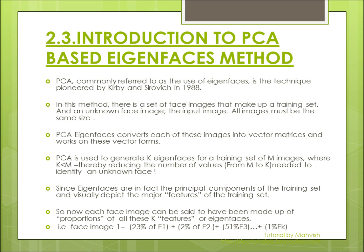We can say that each face image in a training set, or the input image, can be said to have been made up of proportions of all these K features or Eigenfaces. That means that, for example, face image 1 is made up of 23% of Eigenface 1, 2% of Eigenface 2, 51% of Eigenface 3, and so on till the Kth Eigenface. If we add all of these proportions of Eigenfaces and convert it back to an image, it will generate, for example, the first training set image.